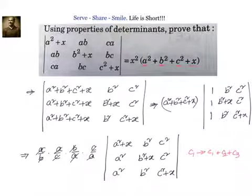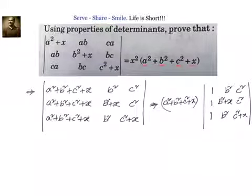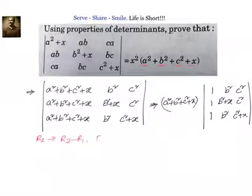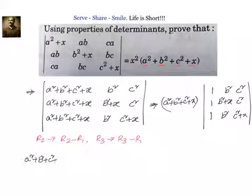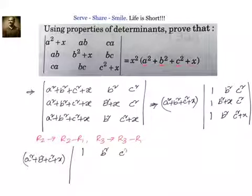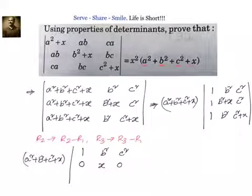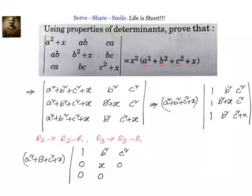Next we perform row operations R2 is assigned R2 minus R1, and R3 is assigned R3 minus R1. Row 1 remains 1, b squared, c squared. For R2 minus R1: 1 minus 1 is 0, b squared plus x minus b squared is x, c squared minus c squared is 0. For R3 minus R1: we get 0, 0, x.